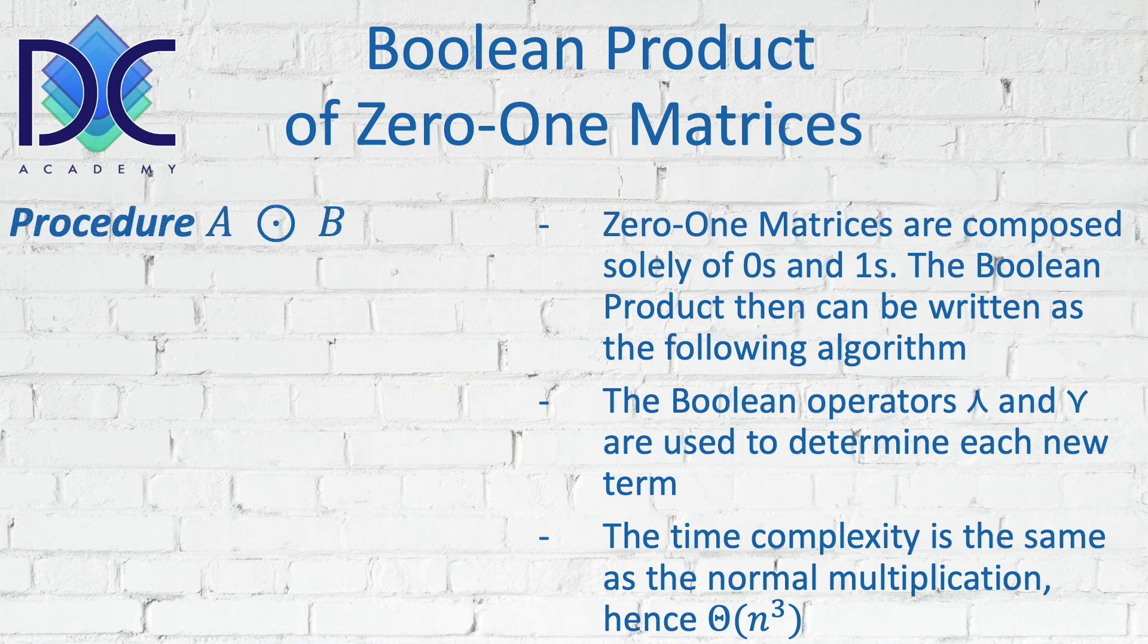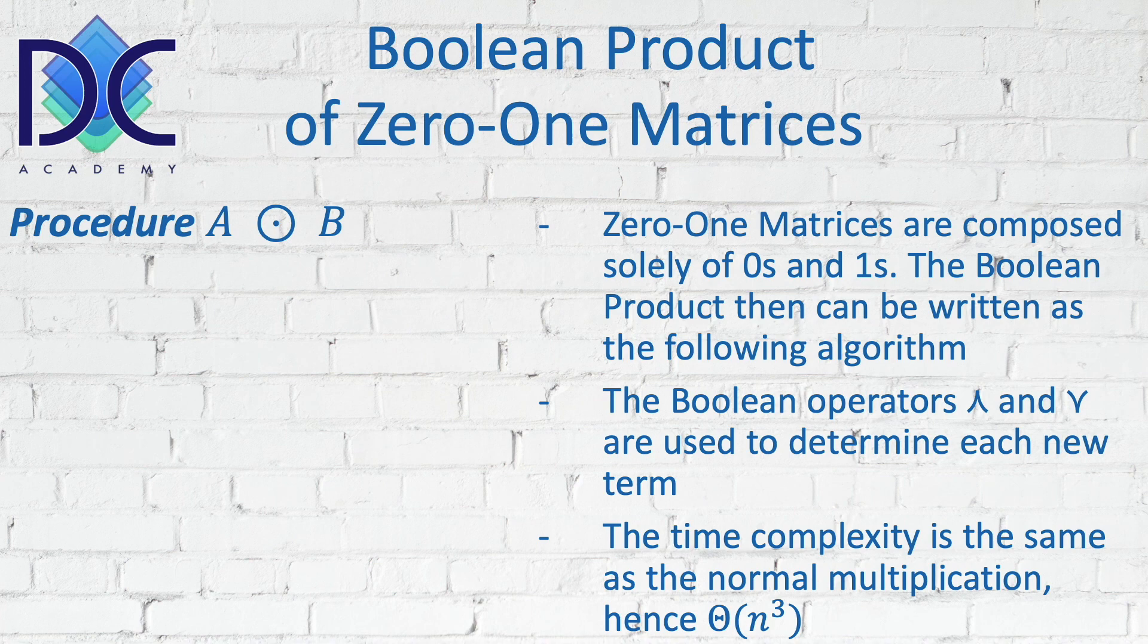And we find that basically the time complexity is the same as the normal multiplication. So we have theta n to the third power.